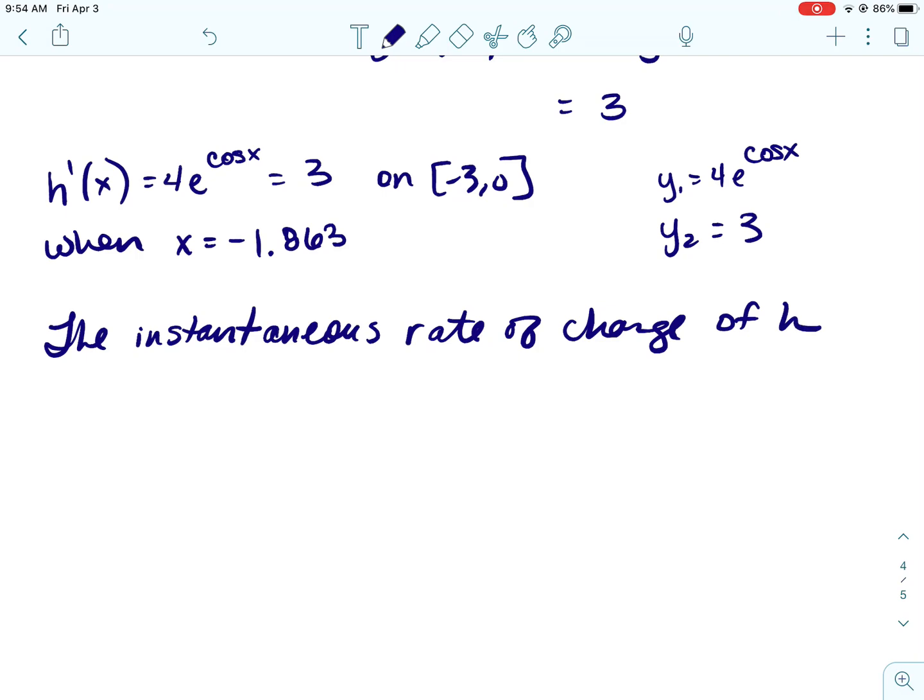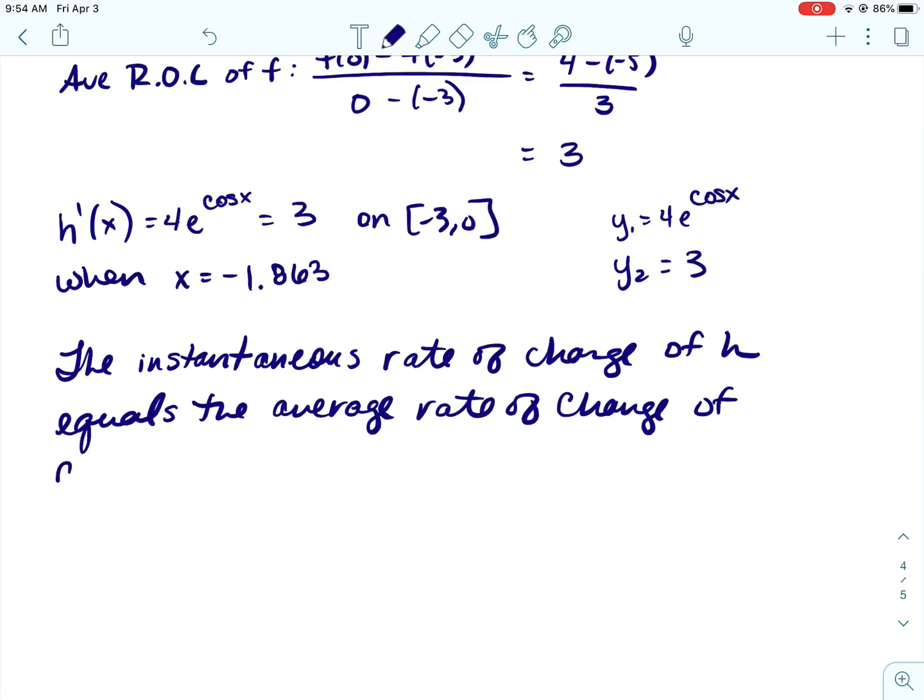Alright, and then we can write a little statement just to make sure we've answered the question. So the instantaneous rate of change of h equals the average rate of change of f over the interval from negative 3 to 0 at x equals negative 1.863 or negative 1.862. It doesn't matter. They don't care.